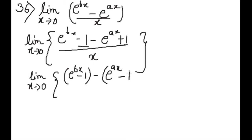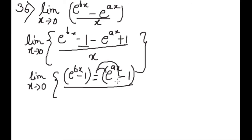जो plus था वो minus 1 हो जाएगा क्योंकि minus बाहर common है। इस minus को यहां से multiply करेंगे तो यह minus हो जाएगा, और minus को यहां multiply करेंगे तो यह plus हो जाएगा, इसलिए यहां पे minus लिखाया।